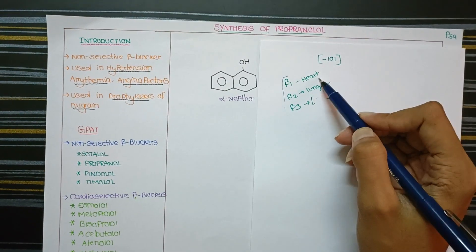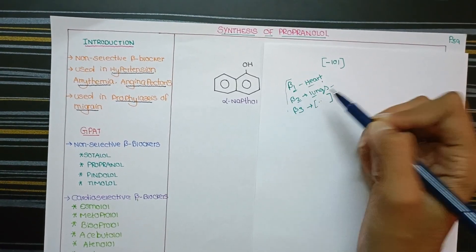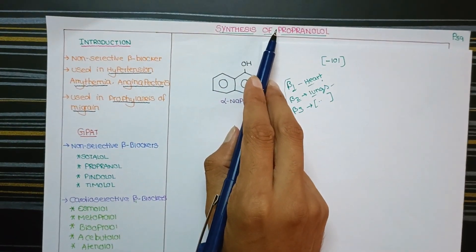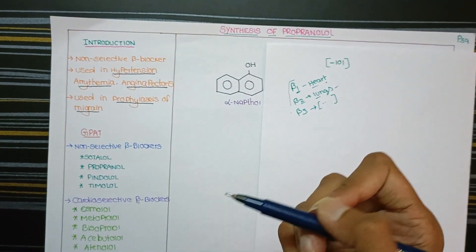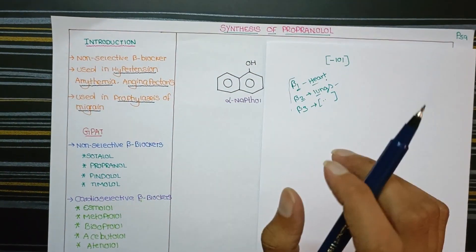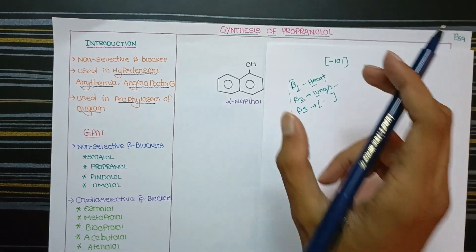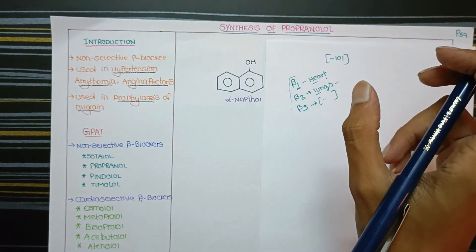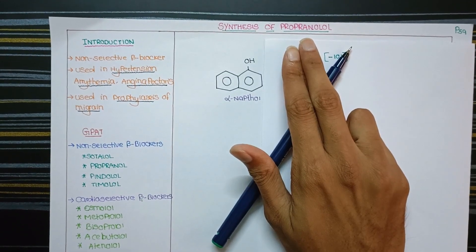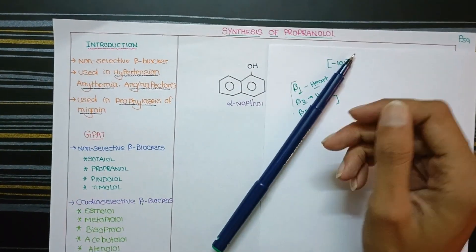A helpful mnemonic: beta-1 — one heart; beta-2 — two lungs. Propranolol is a non-selective beta blocker, meaning it will bind to beta-1, beta-2, and beta-3 receptors. Because it does not selectively block one specific receptor subtype, it is called non-selective. It can bind to any of the three receptor types.